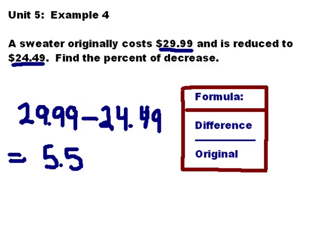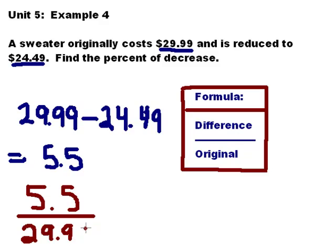Then, I'm going to take that difference and divide it by the original cost. What did the sweater cost before the change? Well, it was originally priced at $29.99 so I'm going to take 5.5 and I'm going to divide by $29.99 and obviously you're going to use your calculator for this.